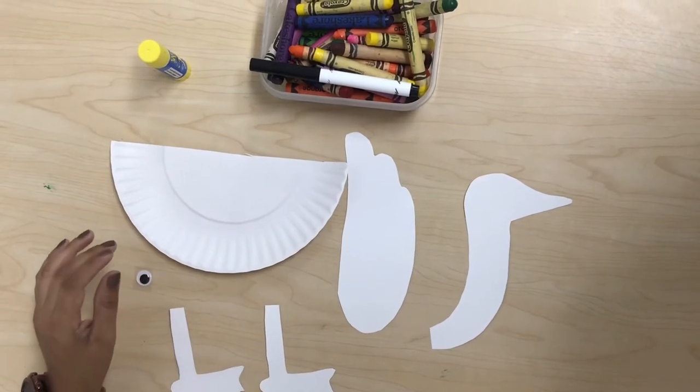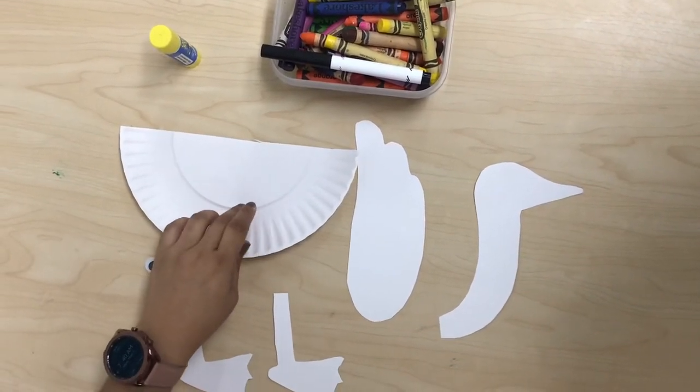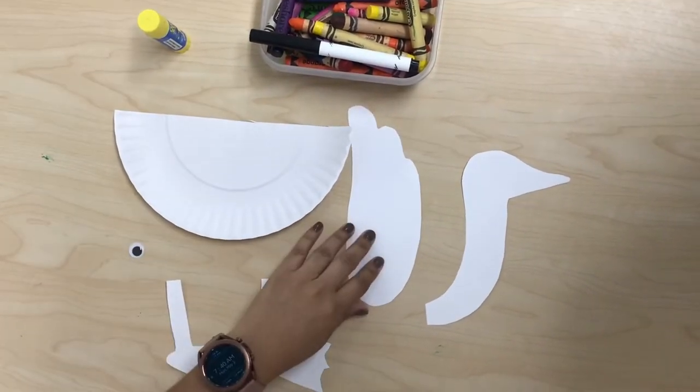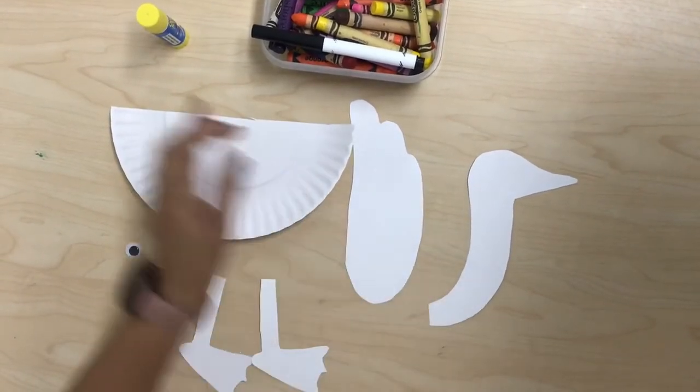Hi, I am Miss Michele and today we're going to create a goose. Today's materials are: half of a paper plate, markers or crayons, googly eyes, wing cutout and two legs cutouts, head and neck cutout, and glue.